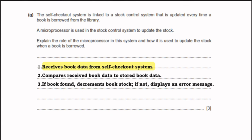The self-checkout system is linked to a stock control system updated every time a book is borrowed. A microprocessor is used to update the stock. Step 1: the microprocessor receives book data from the self-checkout system. Step 2: it compares the received book data to the stored book data. Step 3: if the book is found, decrement the book stock by one; if not, display an error message.